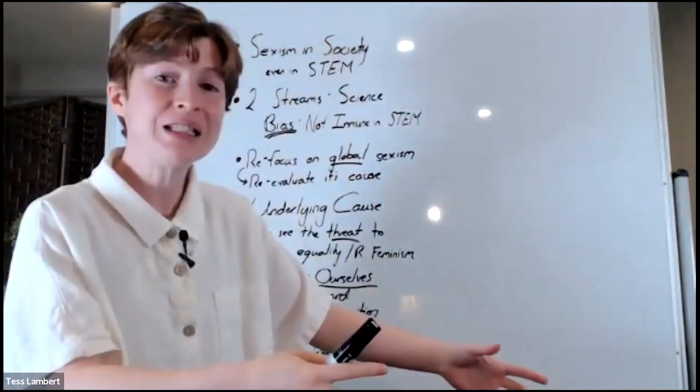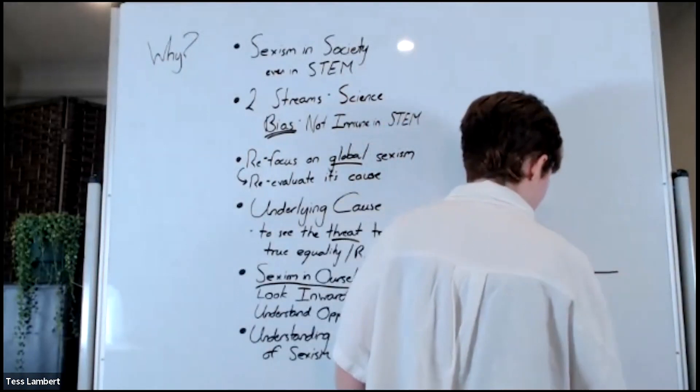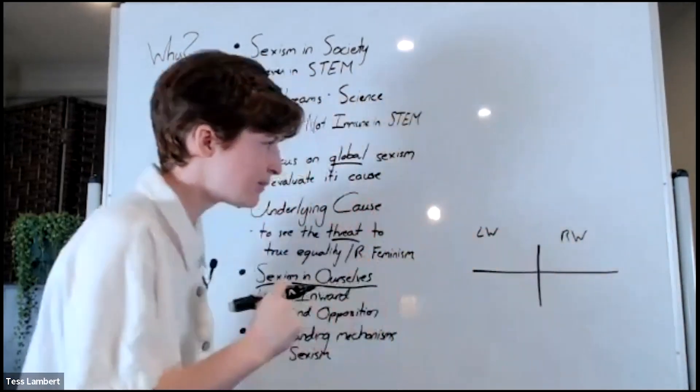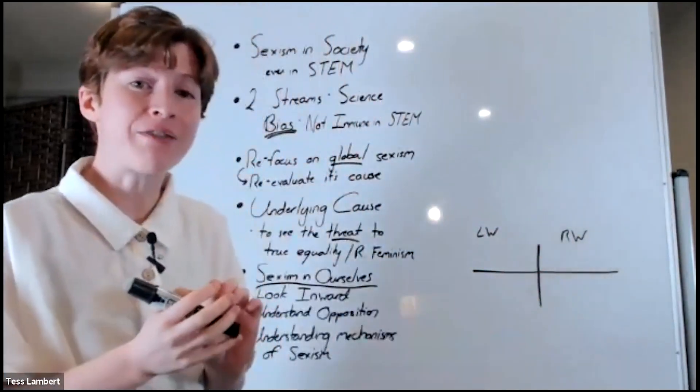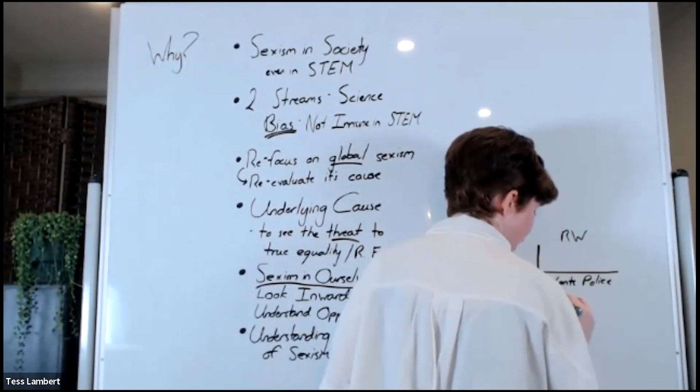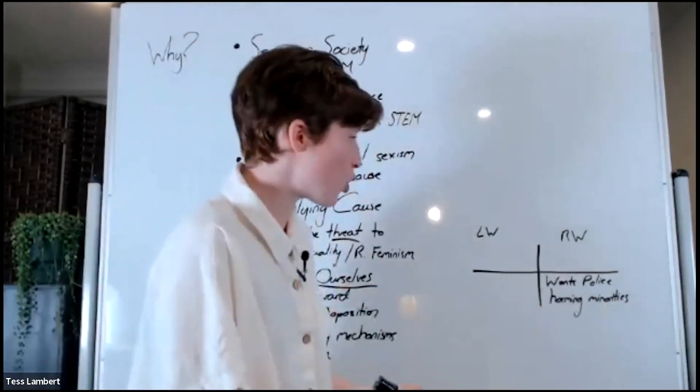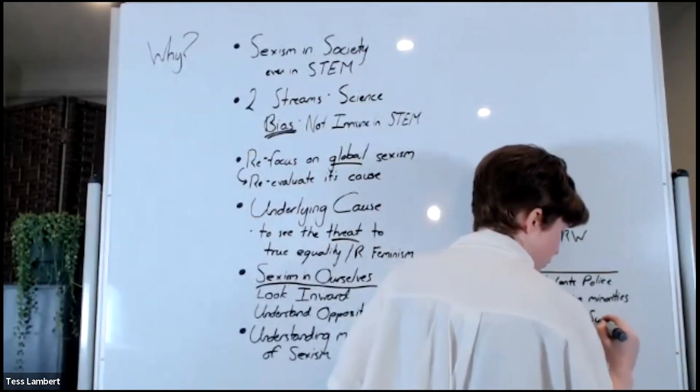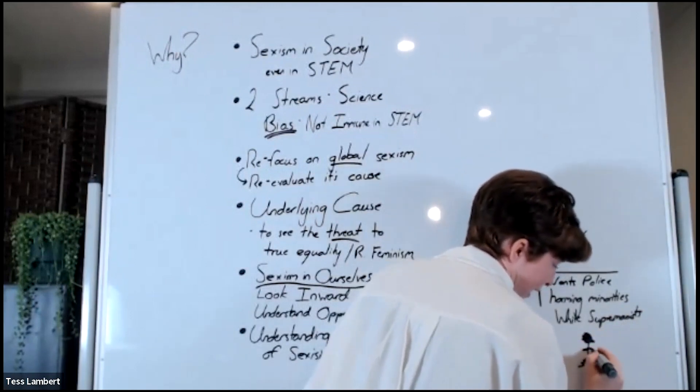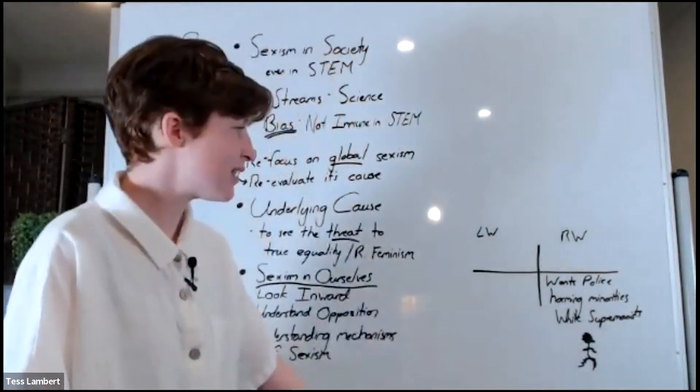This is what I see happen externally, and I believe it happens in the movement. Let's take the concept of defunding the police. What you have are two sides, and it's all too easy for the left wing to say of the right wing, the right wing doesn't care about African-American lives, wants police harming minorities. What they do is they create a straw man because that is an easier argument to fight.